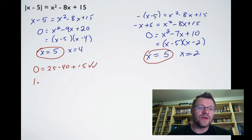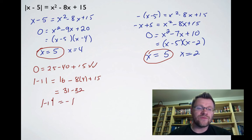Checking x = 4: left side is |-1|, right side is 16 - 32 + 15 = -1. The absolute value of -1 cannot equal -1, because |-1| = 1. This is an extraneous or extra answer, so we can get rid of it.